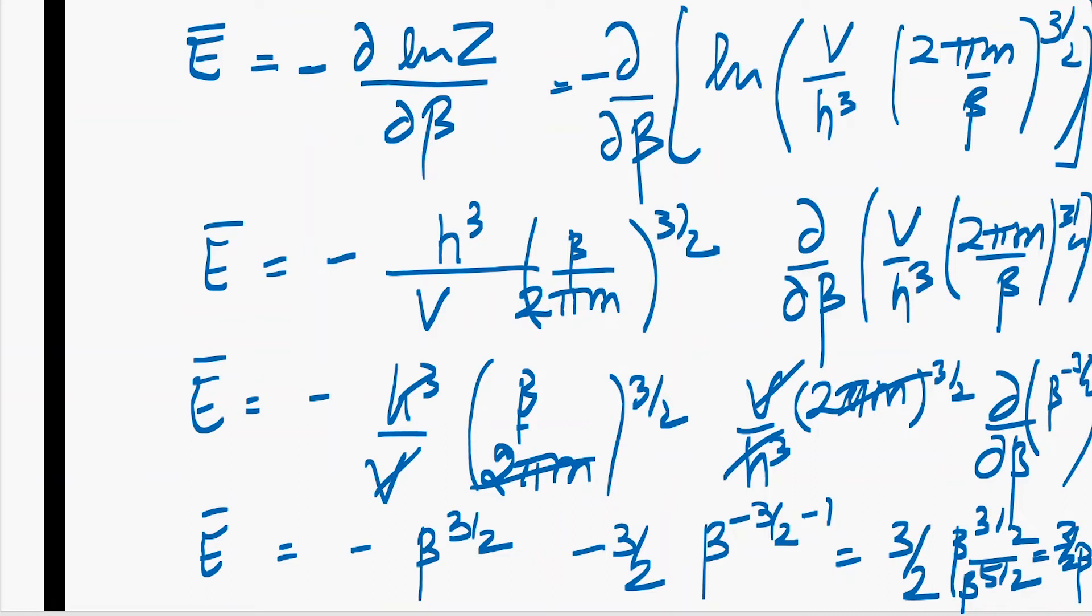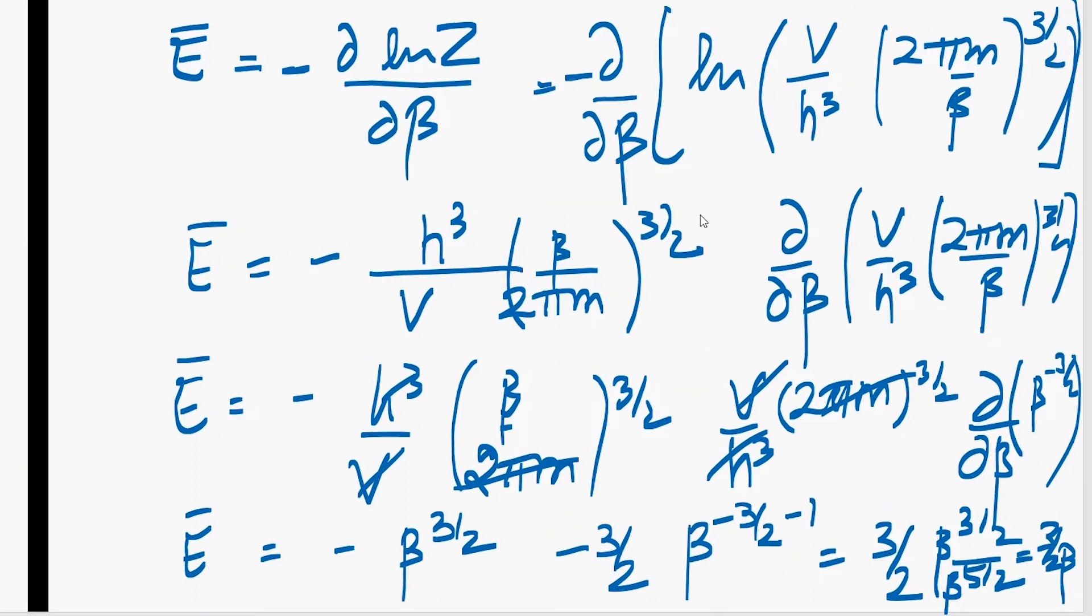We have to first solve the average energy part. So first we have to differentiate this partition function, the natural log of partition function with beta. So simply put this whole expression in it, and we know the differentiation of log is one by the inside term. So our inner term becomes like this, and then differentiation of the inner term.